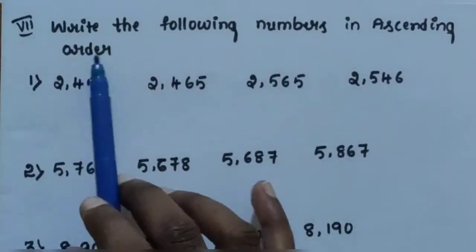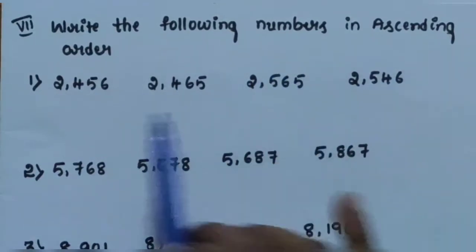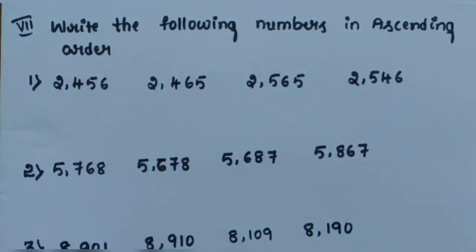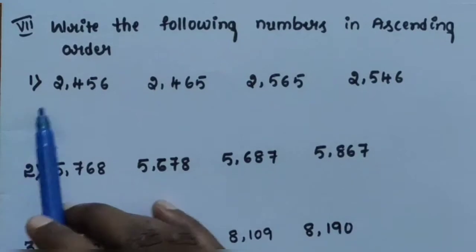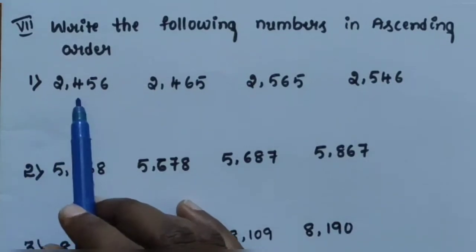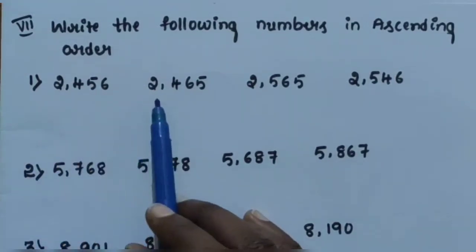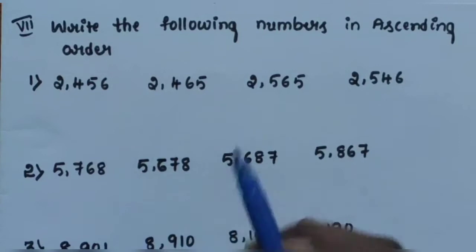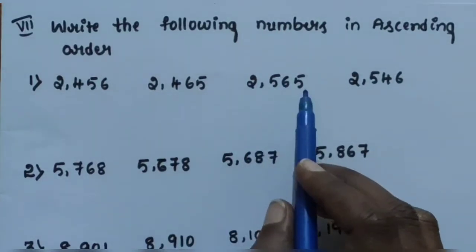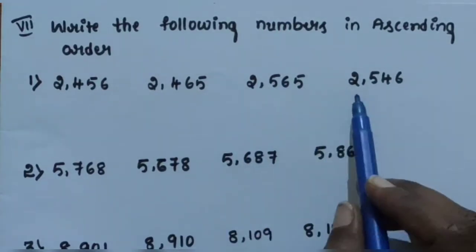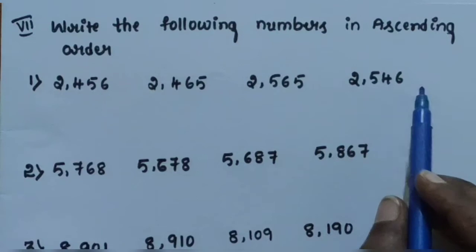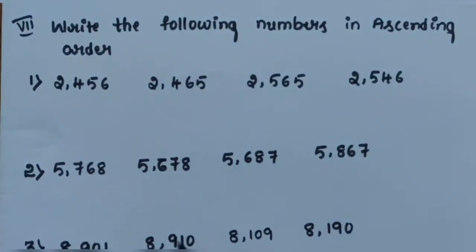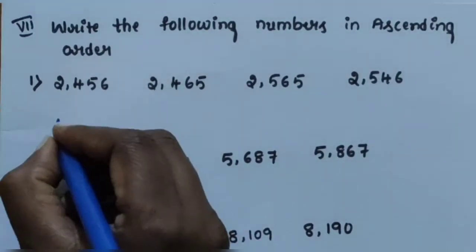Next section: write the following numbers in ascending order. Ascending order means the arrangement of numbers from the smallest to the greatest. Question number 1: arrange 2,456; 2,465; 2,565; and 2,546 in ascending order.